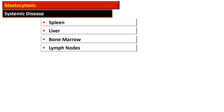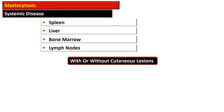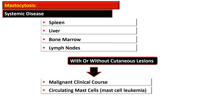A systemic form of mastocytosis also exists, with involvement of organs of the reticuloendothelial system including the spleen, liver, bone marrow, and lymph nodes, with or without skin involvement. There is a more malignant clinical course, circulating mast cells are seen, and mast cell leukemia can be present. In general, it is not possible on morphological grounds to distinguish urticaria pigmentosa with systemic involvement from that with skin disease only.